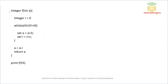This is a function f which accepts an integer argument a. What we are passing to this function is 55, so the value of a will be 55. Inside the function we have an integer i initialized to 0. We have a while loop that continues till the condition is true — that is, till a mod 10 is not equal to 0. So 55 mod 10 gives remainder 5.